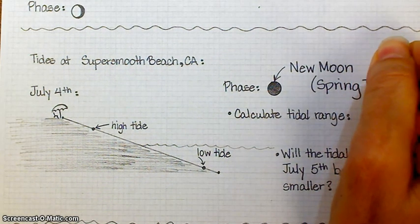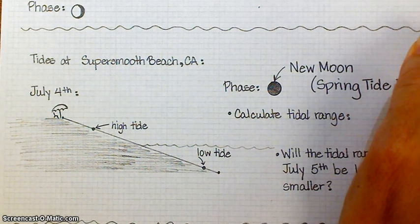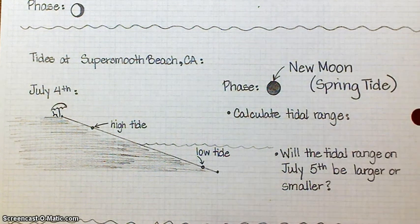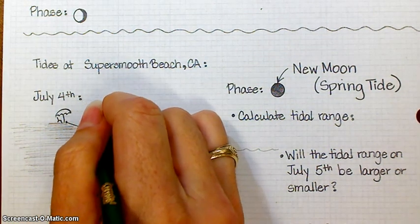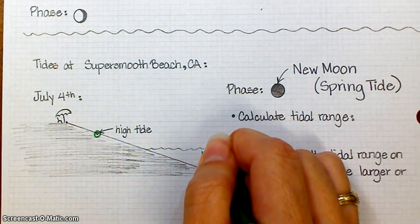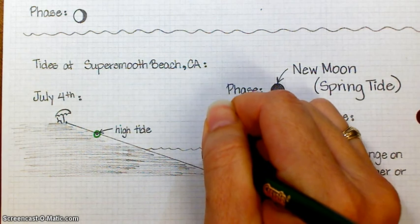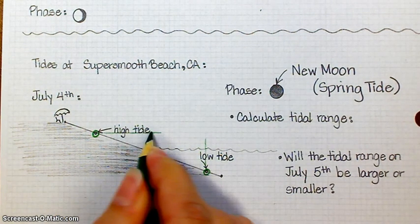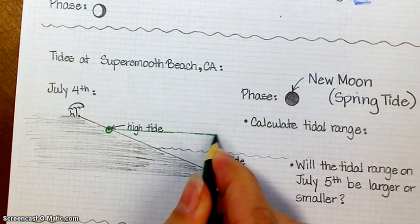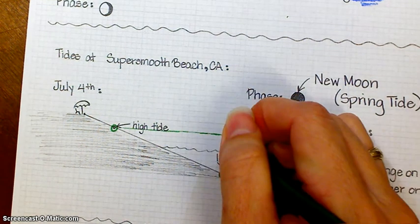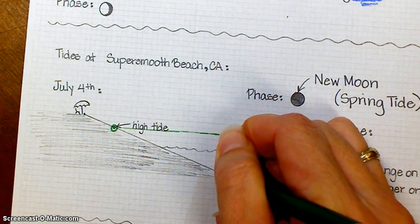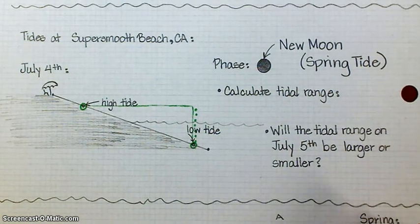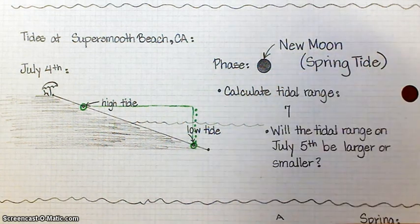Okay, and again there's no numbers, so how are you going to calculate this tidal range from this picture? Yeah, just count the little squares. All right, so there's high tide, there's low tide. All right, so one, two, three, four, five, six, I count seven boxes. What about y'all? Yeah, okay, so your tidal range we're just going to say is seven boxes.